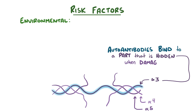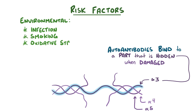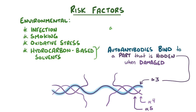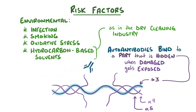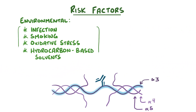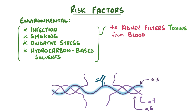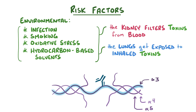When the collagen molecules are damaged by infection, smoking, oxidative stress, or some hydrocarbon-based solvents — as in the case of people who work in the dry-cleaning industry — these antigenic regions on the alpha-3 chain get exposed to the antibodies present in the blood of genetically susceptible people. This also helps explain why Goodpasture syndrome specifically affects the kidneys and the lungs. The kidney filters toxins from the blood, so as they pass through the basement membrane, they likely expose parts of the alpha-3 chain. Similarly, the lungs get exposed to various inhaled toxic substances like cigarette smoke, once again exposing the parts of the alpha-3 chain.